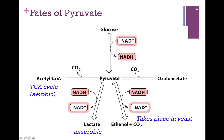In yeast, they can take pyruvate and through a process of fermentation convert it to ethanol. For mammals and other higher eukaryotes, they can take pyruvate and through aerobic metabolism convert it to acetyl-CoA and fully oxidize that to CO2. We'll see this in Chapter 14 — it involves the transition step and the citric acid cycle.